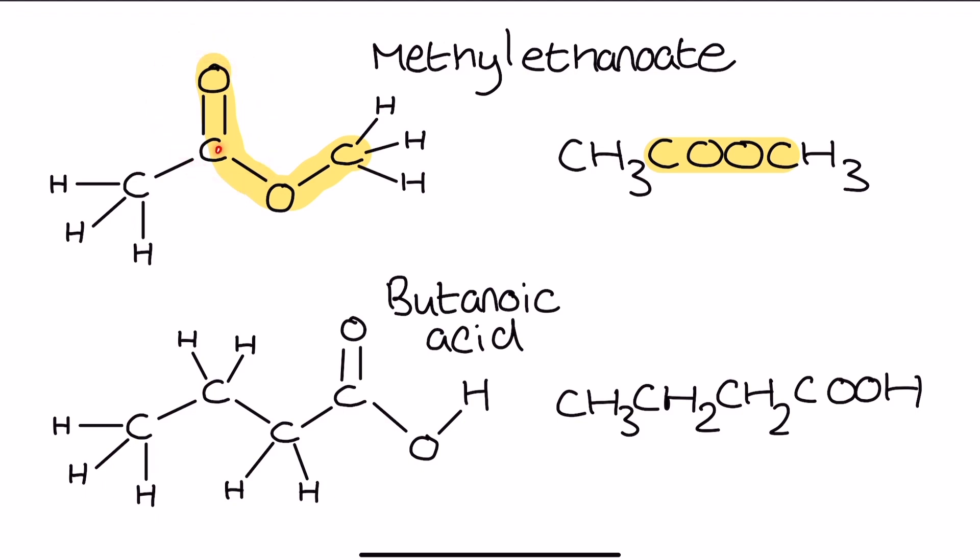But actually, we've got this double bond to an oxygen up here, and then we do go through an oxygen through this section, but it's definitely not carbon, then oxygen, then oxygen, then the other carbon. We've got this double bond feature just here. Make sure that you can interpret structural formula for a range of functional groups like this one.